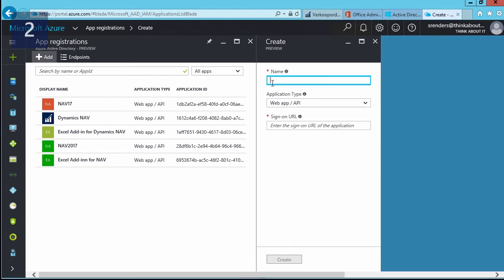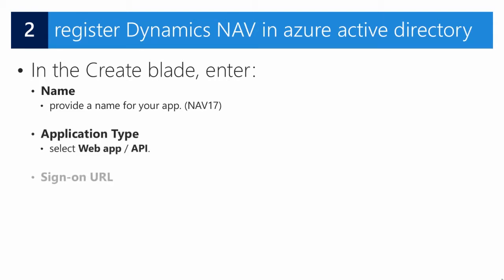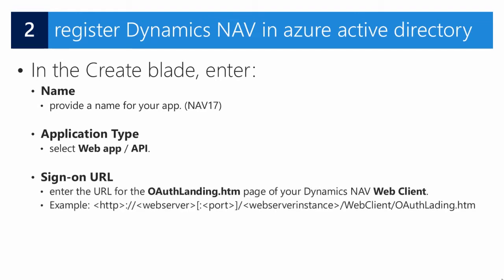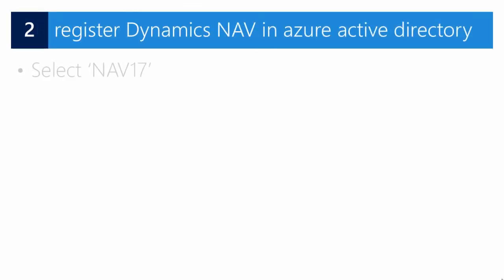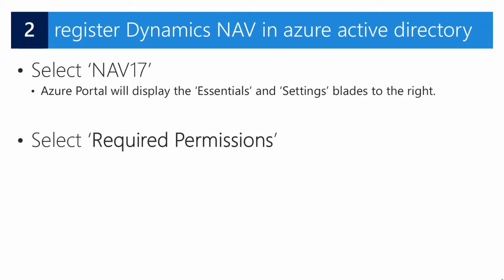In the app registrations blade, we create a new one by clicking the 'Add' button. You need to provide information about the application: a name, the application type — which must be 'Web App/API' — and a sign-on URL. The sign-on URL has the following format: it's the same URL used for the web client, but with '/OAuthLanding' added at the end.